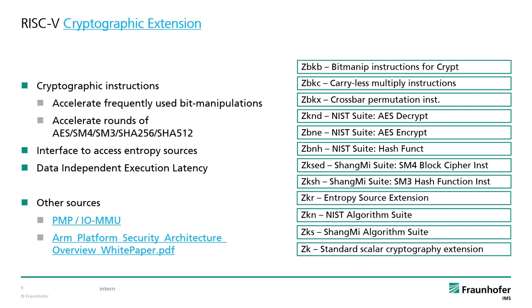You might also have heard about the upcoming Cryptographic ISA extension. This extension mainly supports the performance of cryptographic algorithms by defining specialized instructions for popular ciphers and hashes, and it also describes a standard interface to access randomness generated by an entropy source. It also deals with a certain type of attacks based on runtime differences by providing operations with data-independent execution times. Other parts of a security architecture are described in the physical memory protection specification, and eventually the RISC-V security working group will be publishing an architecture-level definition of security measures, like ARM did in the past with its platform security architecture.